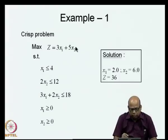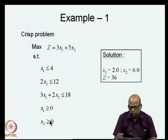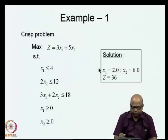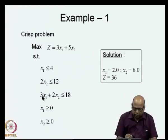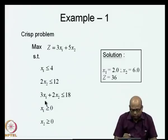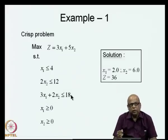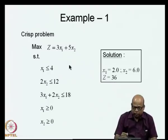The problem is: maximize z = 3x1 + 5x2, subject to x1 ≤ 4, 2x2 ≤ 6, 3x1 + 2x2 ≤ 18, with non-negativity conditions. The solution is x1 = 2, x2 = 6, and z = 36. This problem states that x1 must always be less than or equal to 4, 2x2 less than or equal to 12, and 3x1 + 2x2 less than or equal to 18, giving z = 36 for the crisp problem.